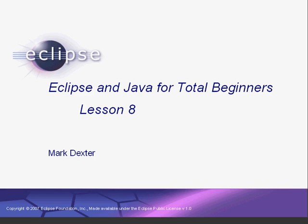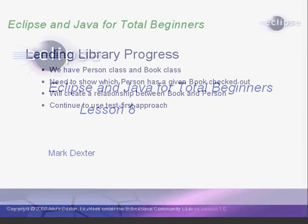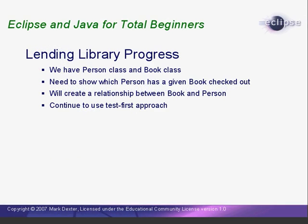Hello again, and welcome back to Eclipse and Java for Total Beginners. In the last lesson, we started our Book class. In this lesson, we're going to create a relationship between the Book class and our Person class. That way we can tell which person has a book checked out. We're going to continue using the TestFirst methodology. So let's get started.